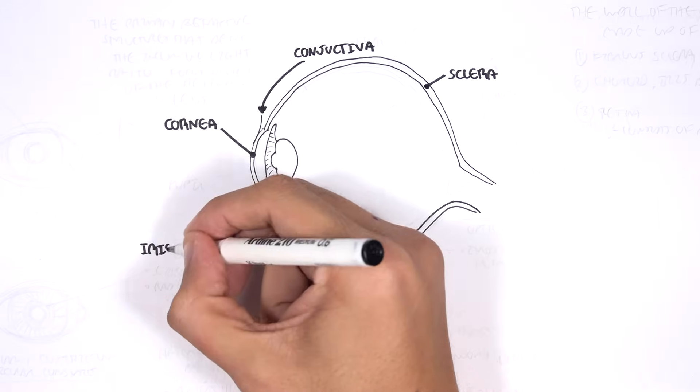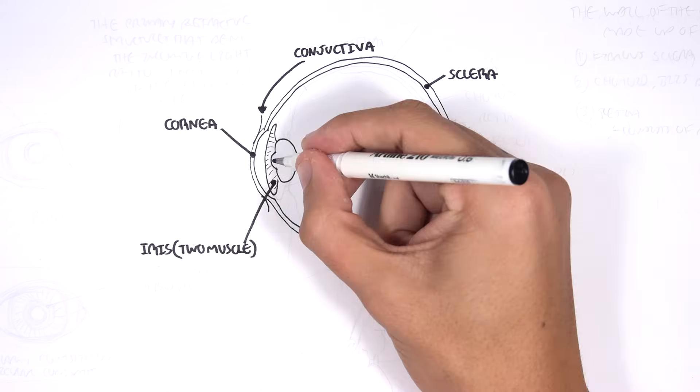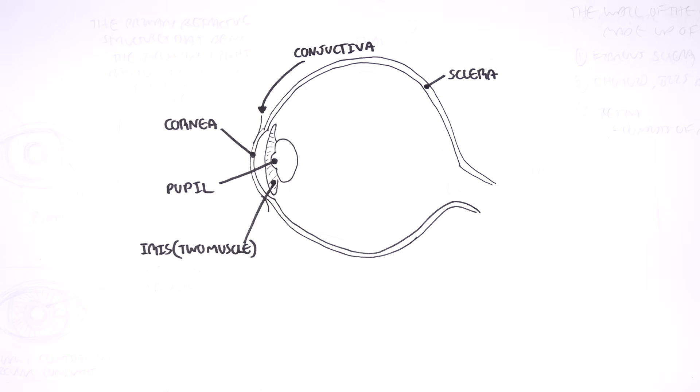The iris surrounds your pupil. The iris makes the color of your eye and is responsible for changing the size of the pupil through its two muscles. So here is the pupil, the black part of the eye, which captures the image you are seeing.